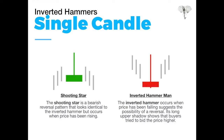An inverted hammer is the opposite of a shooting star — it occurs when price has been falling and suggests a possible reversal. The long upper shadow shows that buyers tried to bid at a higher price. The bulls came in and started driving price up, but the bears still win and the price closes near its opening. That's a good indicator of indecision and struggle between buyers and sellers, suggesting a possible reversal is imminent, based on structure.